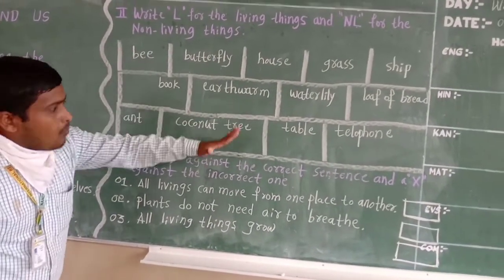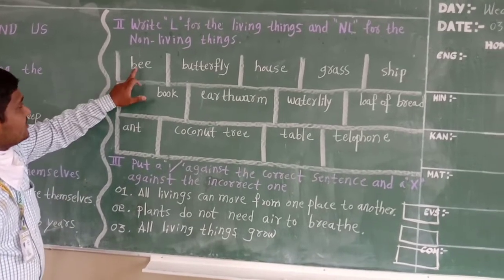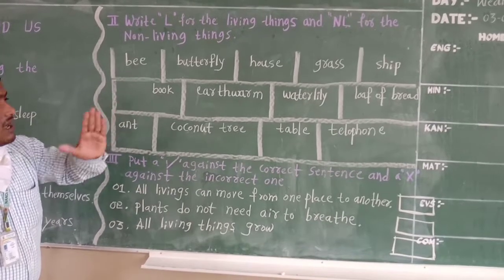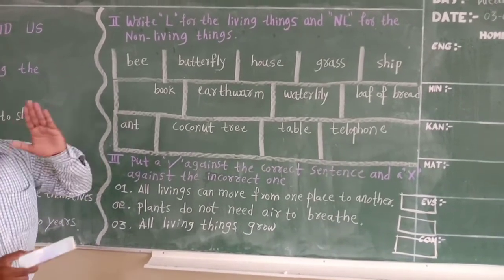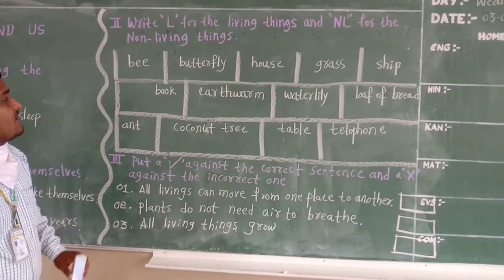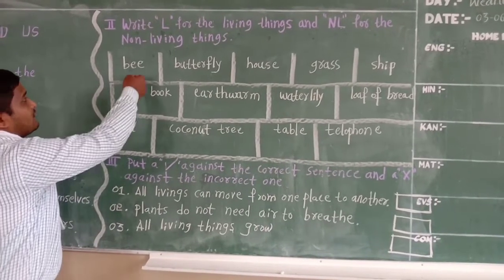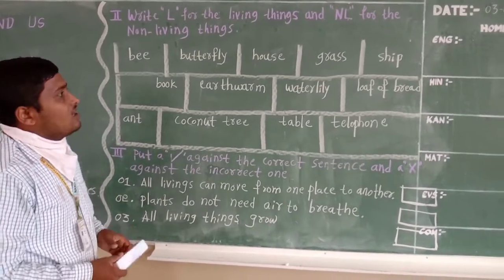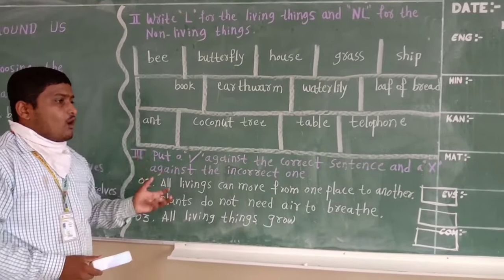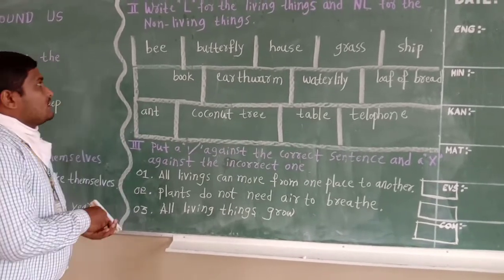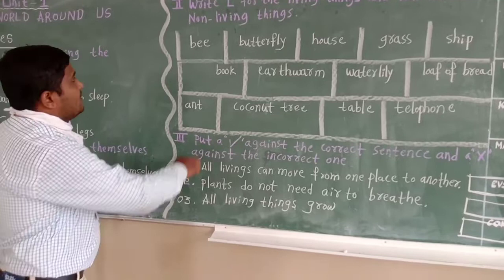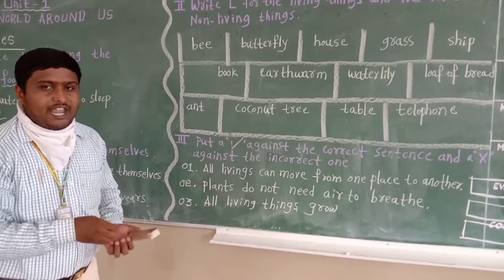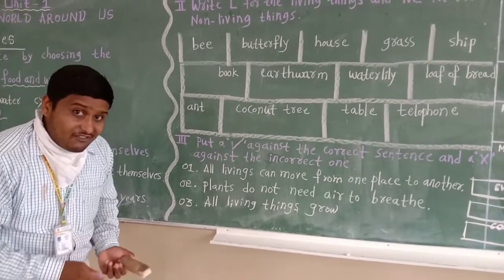Here I have given one box. In that box I have written some living things and some non-living things. Which things are living things? You have to write L in that box. Which things are non-living things? You have to write N. Now we start: first one — bird. Is bird living or non-living? Yes, students, bird is living things.